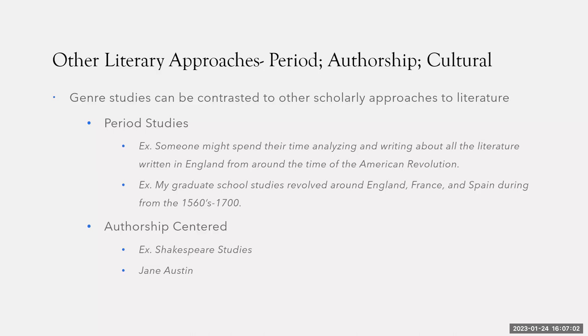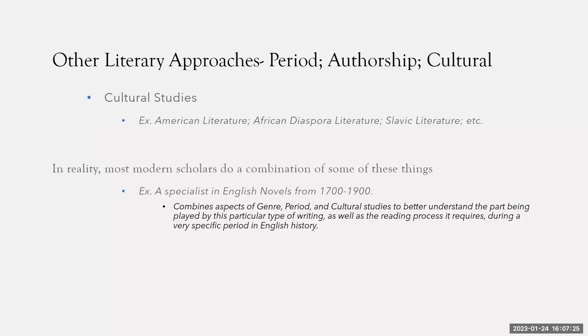In an authorship-centered approach, you might study Shakespeare for your whole life. I know individuals who have been writing about Jane Austen for 20 years on end, always studying the same thing. There's also cultural studies — we could only study American literature, or we might study African diaspora literature: stories, novels, and poems written by people originally from Africa who were displaced or moved to a different part of the world, carrying their culture and literary customs with them.